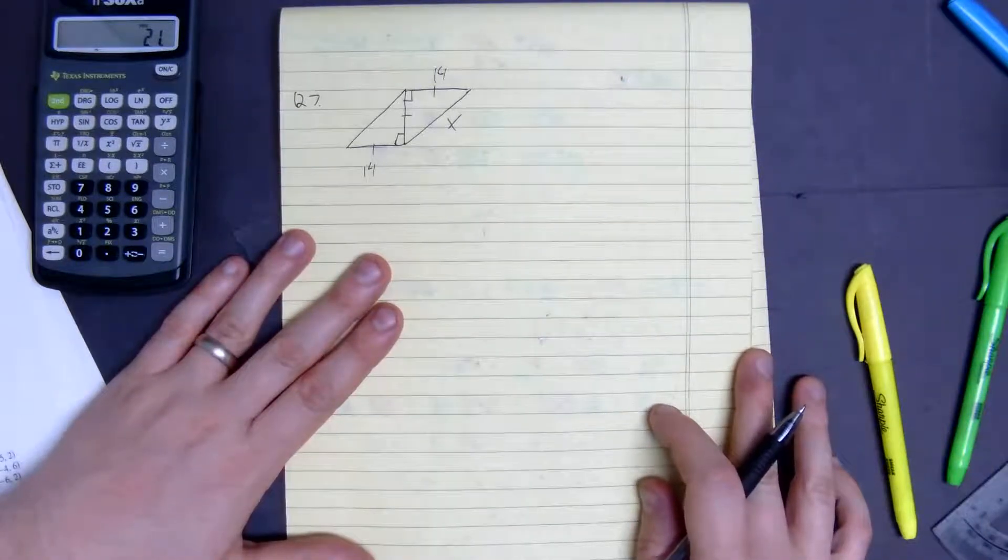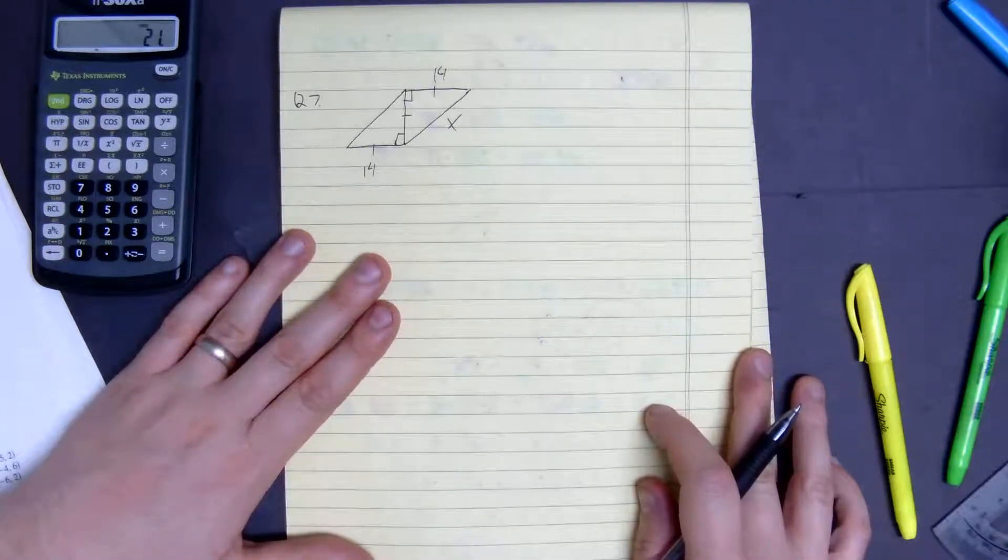All right, so we have right here two isosceles triangles, and we're trying to find its right angle.